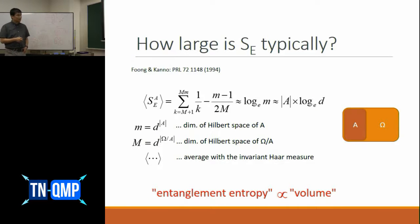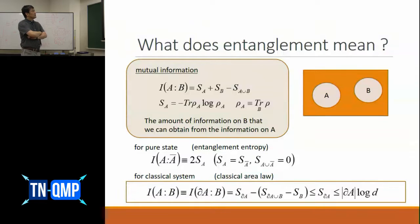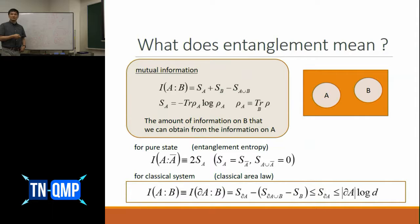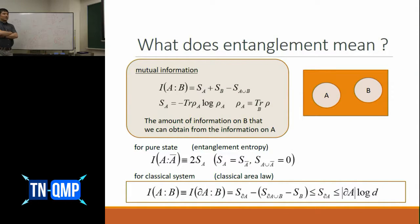Question: what is the definition of entanglement entropy for classical systems? In the classical case, we use mutual information between A and A-bar — we don't usually call it entanglement entropy for classical systems, just mutual information. It corresponds to the conventional entropy of the subsystem.